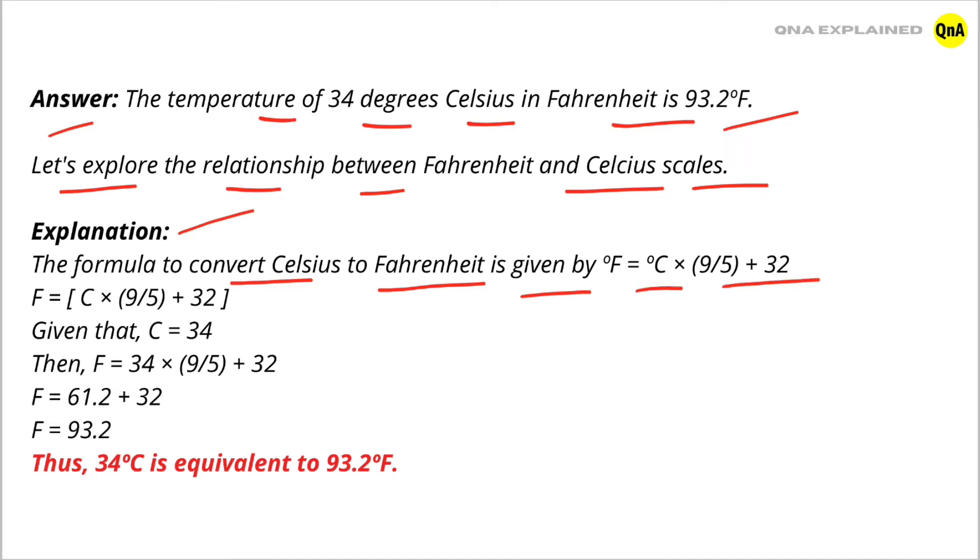Given that C = 34, put the value of Celsius in this formula. Then F = 34 × (9/5) + 32, which is equal to 61.2 + 32, so F = 93.2.